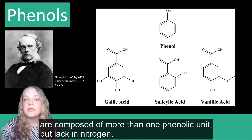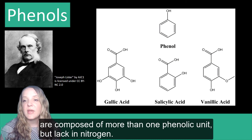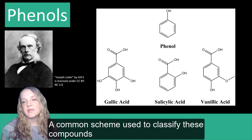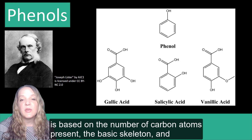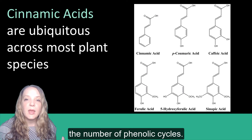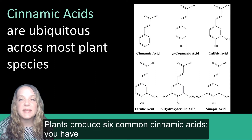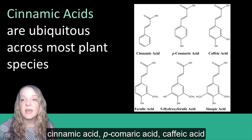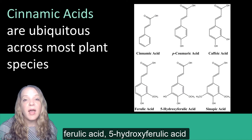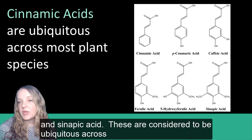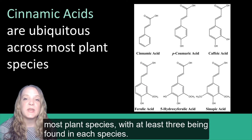Polyphenols are composed of more than one phenolic unit but lack nitrogen. A common scheme used to classify these compounds is based on the number of carbon atoms present, the basic skeleton, and the number of phenolic cycles. Plants produce six common cinnamic acids: cinnamic acid, p-coumaric acid, caffeic acid, ferulic acid, 5-hydroxyferulic acid, and sinapic acid. These are considered to be ubiquitous across most plant species, with at least three being found in each species.